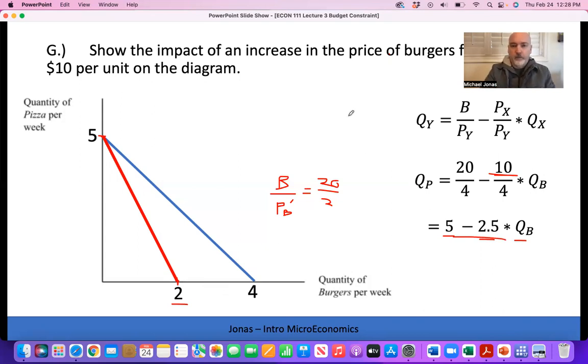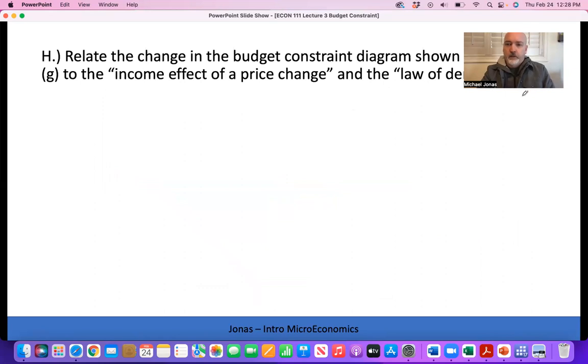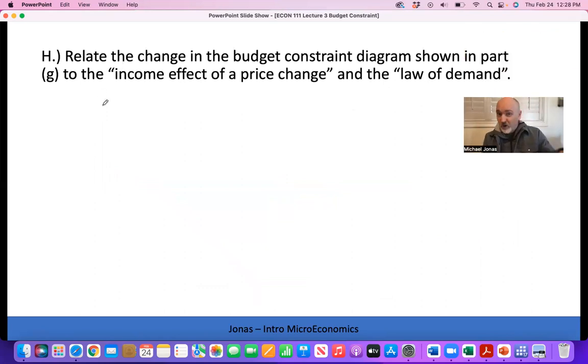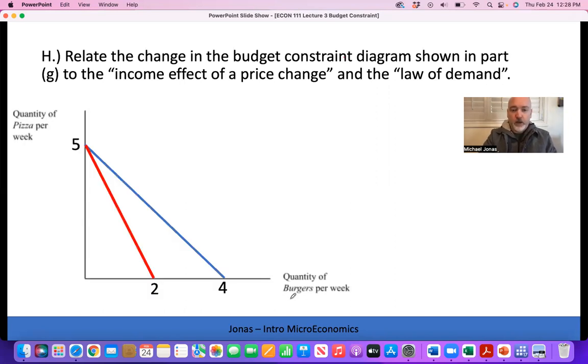Last question. Relate what we just saw, that pivot effect in the budget constraint, to the income effect of a price change and the law of demand. The law of demand tells us simply when the price of a product goes up, we expect consumers to purchase less - quantity demanded will fall. The income effect is one reason why we would reasonably expect that to happen. It's essentially what we just saw on that diagram - the price of X went up.